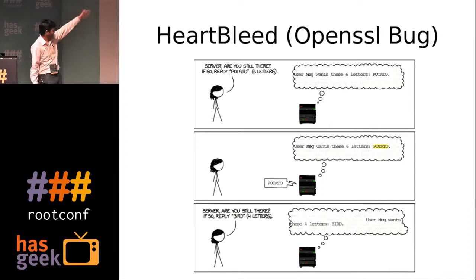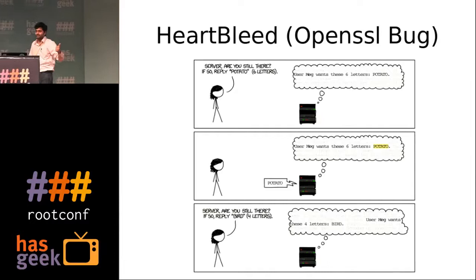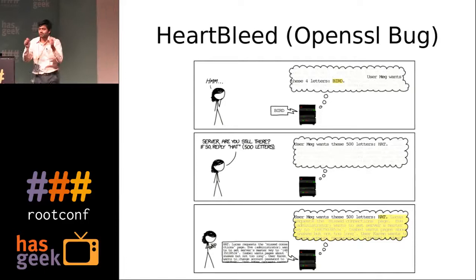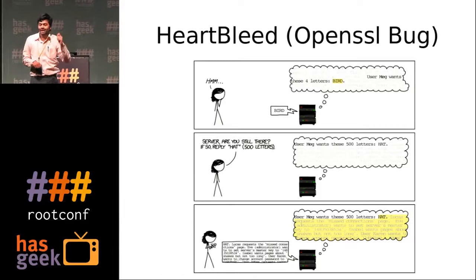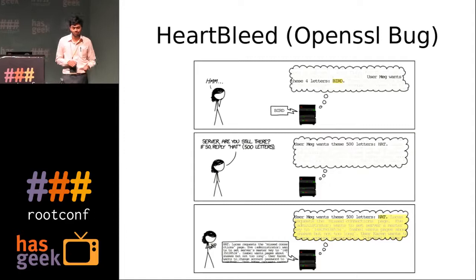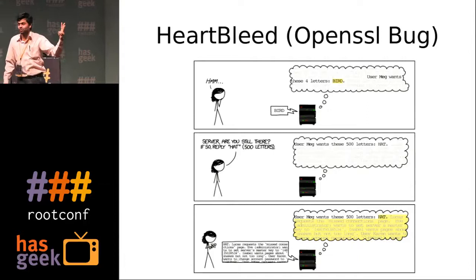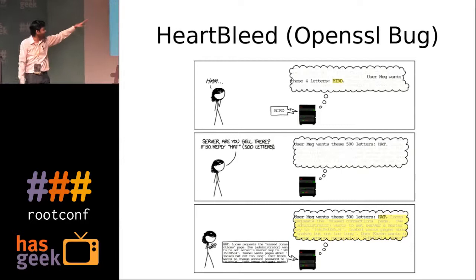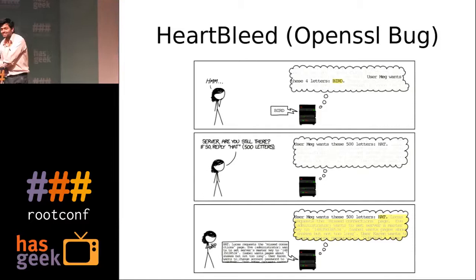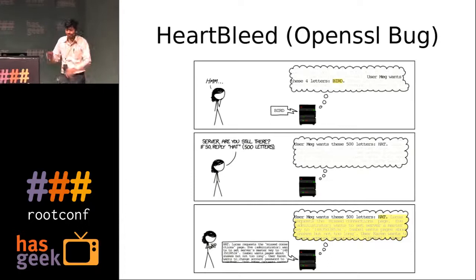He again sent a request: 'Reply, bird — four-letter word.' Server responds back: 'bird, four-letter word.' Now this is where, in the security domain, what we generally tell everyone is: never trust user input. And this is what was the flaw. See the next request: 'Server, are you still there? If yes, reply with hat — it's a three-letter word.' But he gave an input of 500 letters. And the response came back with not just 'hat,' but the next consecutive memory segments up to 500 characters — all of that came back. Now this looks like a buffer overflow, a normal simple flaw.